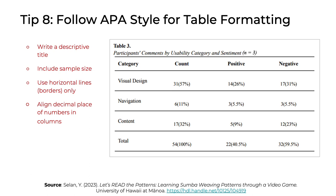Tip 8: This tip has to do with styling and formatting of any tables that you build. We want you to follow APA style, which means there are specific guidelines for how to format tables. Specifically, you should write a descriptive title for each table, include the sample size somewhere in the table, use horizontal lines only — no vertical borders — and align all decimal places of numbers within columns. By following these guidelines, you can make it easy for readers to make sense of your tables.